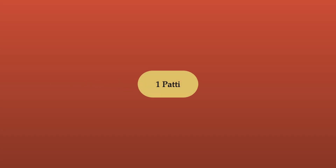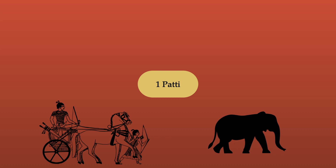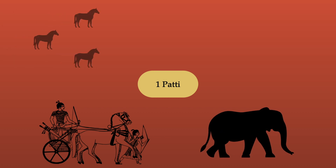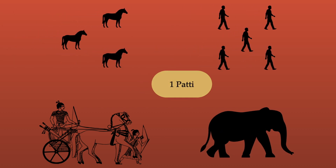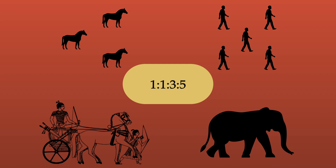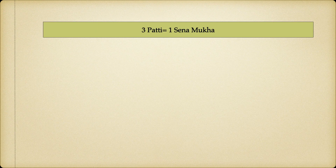The smallest grouping is called a Patti. In a Patti, there is one chariot, one elephant, three horses, and five foot soldiers — so these ten together make a Patti. The ratio in a Patti is 1:1:3:5, and this ratio remains constant across all battle formations within the Akshauhini.